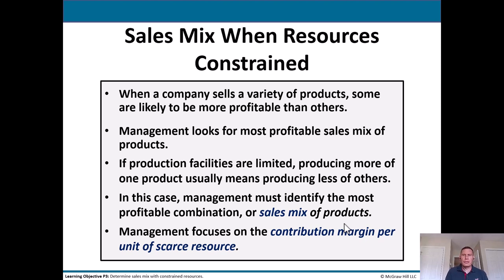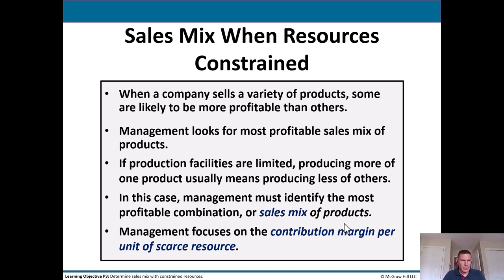Sales mix when resources are constrained: when a company sells a variety of products, some are more profitable than others. Management looks for the most profitable sales mix. If production facilities are limited, producing more of one product means producing less of others. Management must identify the most profitable combination and focus on the contribution margin per unit of scarce resource.